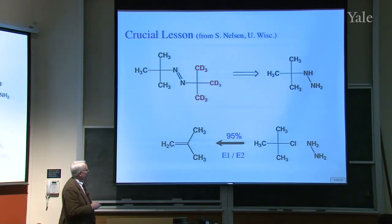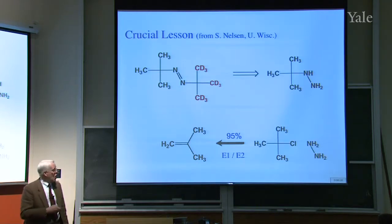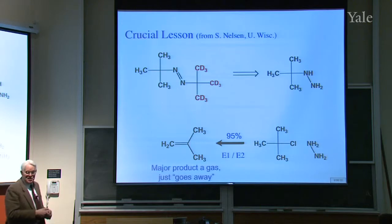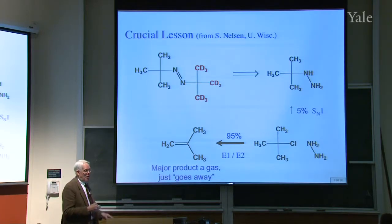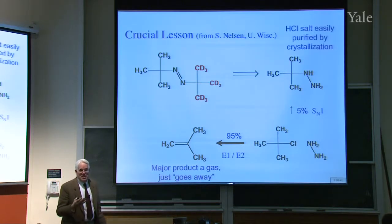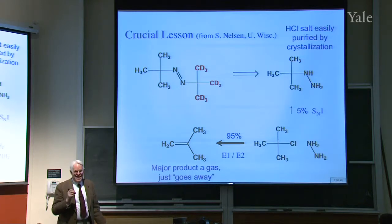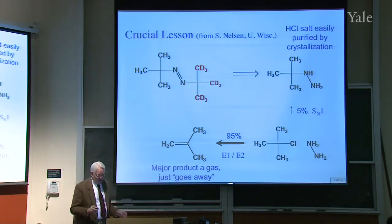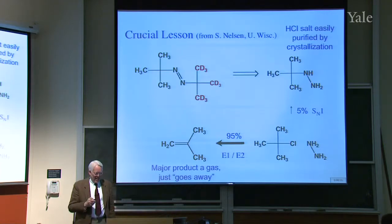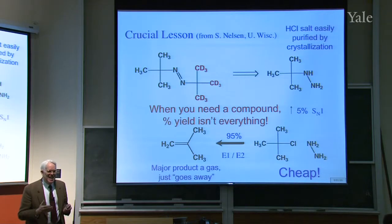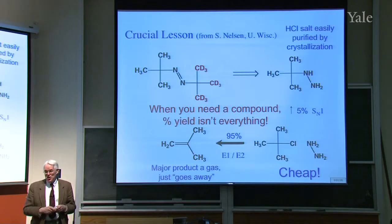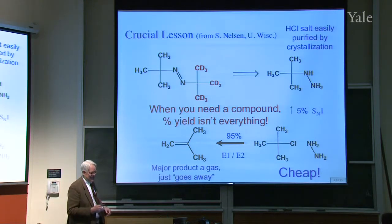It's indeed true that 95% of it is elimination. But that product is a gas, so it just goes away. And the other 5% is the stuff you want. Furthermore, it's very easily purified. You can crystallize it. So in one day, I made 10 grams of it. This was after Joe David had graduated. So what's the lesson here? If you have cheap starting materials, you don't need a high percentage. The yield you get isn't a big deal. If you've got cheap stuff and you can easily do it and purify the product, that's the way to make the stuff.